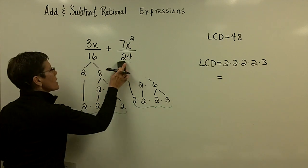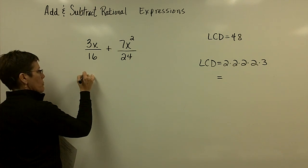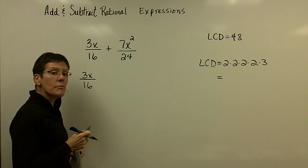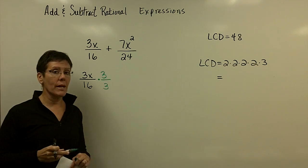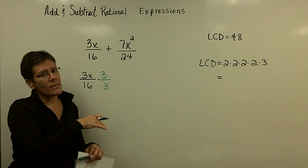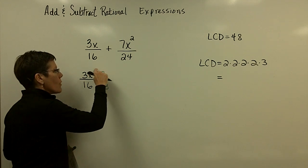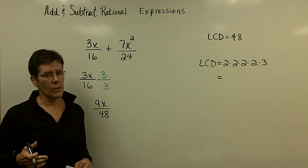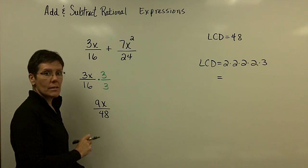Now let's talk about how to get common denominators in these fractions. I want that 16 in this fraction to become a 48. I know it has to be multiplied by 3 to become 48, so I better multiply the top of this fraction by 3 as well — because I want to be multiplying by 1, which doesn't change the value of the fraction. It just writes the fraction in an equivalent form. You now have to call this 9x over 48. Don't notice that 3 goes into each of those equally and try to reduce it — you just multiplied by 3, top and bottom. Don't reduce it at this point.